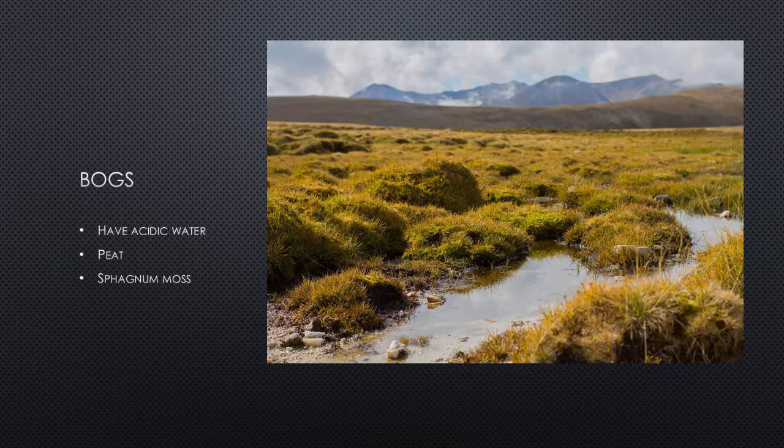Our third type of wetland is a bog. We usually see bogs in higher, colder climates. They have acidic water, a lot of peat and sphagnum moss — we talked about this with plants in Canada. Bogs have slower decomposition and are not dominated by woody trees like swamps.